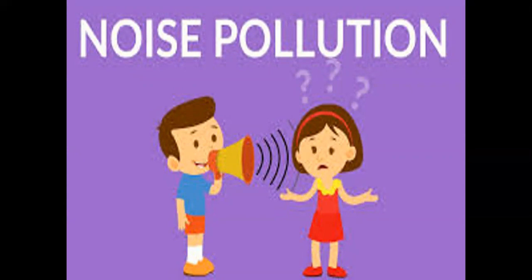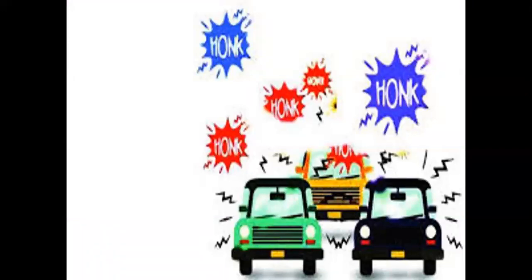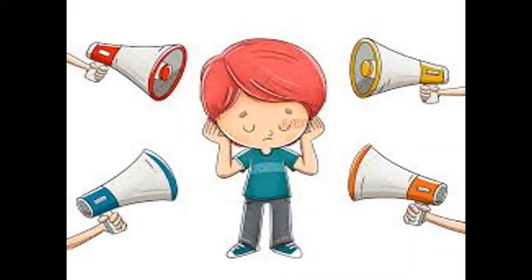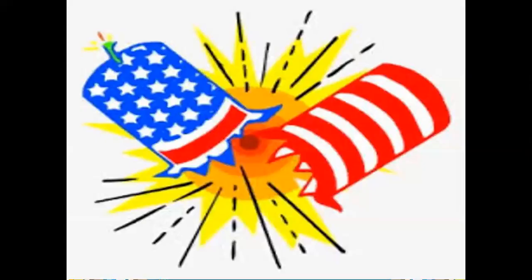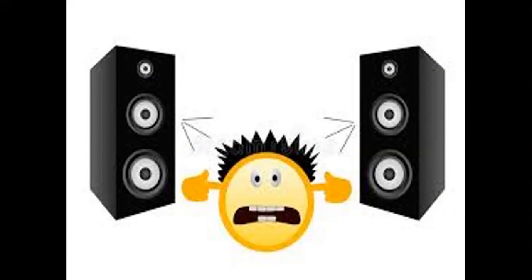How does noise pollution occur? First, it occurs due to the continuous honking of vehicle horns. When there is no need and still you are using the horn, it is very bad. Don't use the horn without any reason — use it only in the proper place. Next is the use of loudspeakers, which create lots of noise pollution. If you are using them, use them for a very short period of time. Next is the bursting of firecrackers, which also creates really bad noise pollution, so try to avoid it. Loudspeakers used on different occasions should also be avoided, and if needed, use them for a very short period of time.